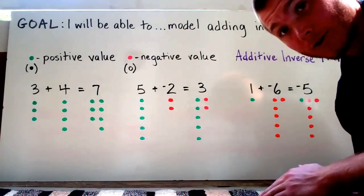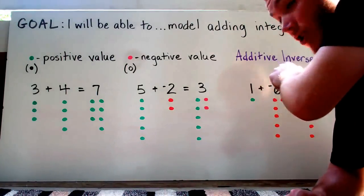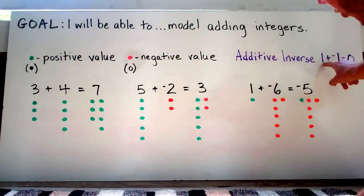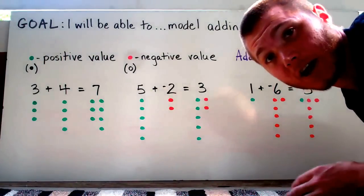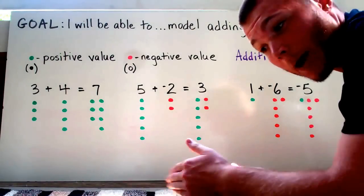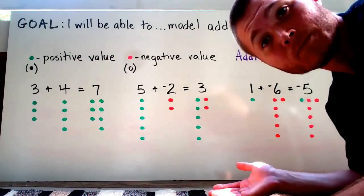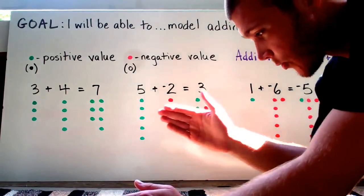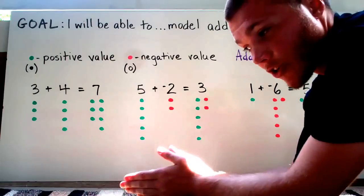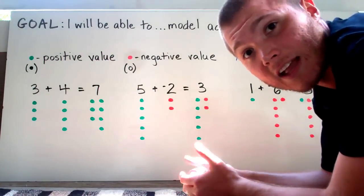If you look back at your vocabulary packet for unit one, there's an additive inverse. We're going to have to use this term to solve some of these problems. An additive inverse means that when we add one and its opposite value, negative one, we're going to get zero. The opposite of one is negative one. Whenever I have one positive value and one negative — they're both worth the same — they're going to cancel each other out. We're going to use that to show you how to model adding integers.